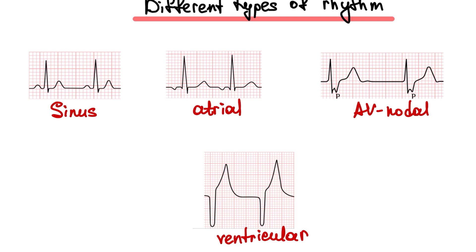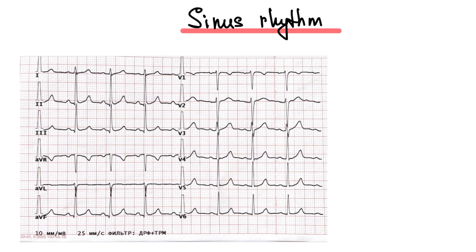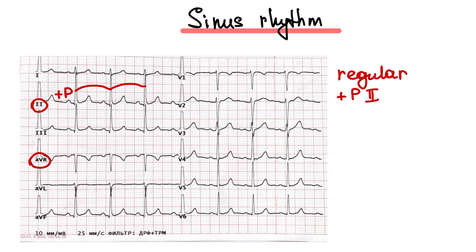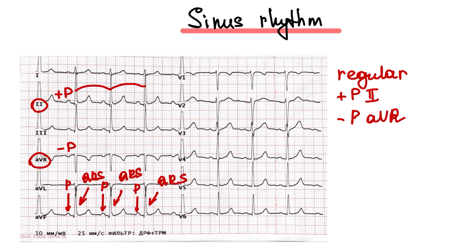And what about sinus rhythm? Sinus rhythm is usually regular. We can see a positive P wave at lead 2 and a negative P wave at lead AVR. We can see a P wave before every QRS complex, with P waves similar throughout one lead. The QRS complex is narrow, and we can see the relationship between P waves and QRS complexes.